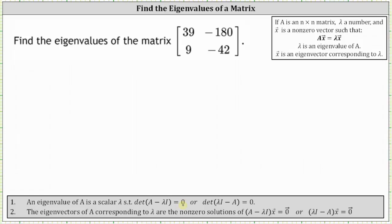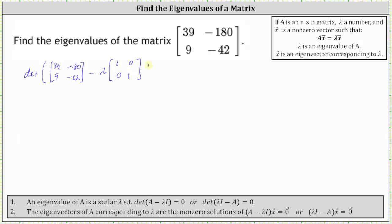To set this up, we have the determinant of matrix A with entries 39, negative 180, 9, and negative 42, minus lambda times the two by two identity matrix, equals zero.